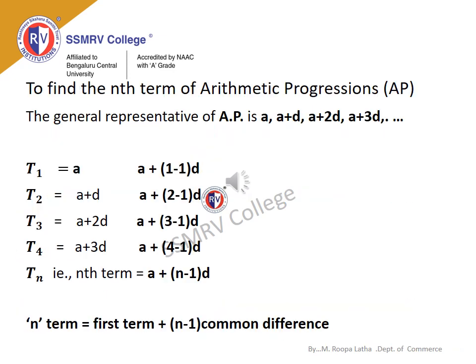To find the nth term of an arithmetic progression: the general form is a, a+d, a+2d, a+3d, and so on. So t₁ = a = a + (1−1)d = a + 0 = a. Similarly, t₂ = a + (2−1)d = a + d. t₃ = a + 2d, t₄ = a + 3d, and so on. Therefore, the nth term is: tₙ = a + (n−1)d, that is, nth term = first term + (n−1) × common difference.